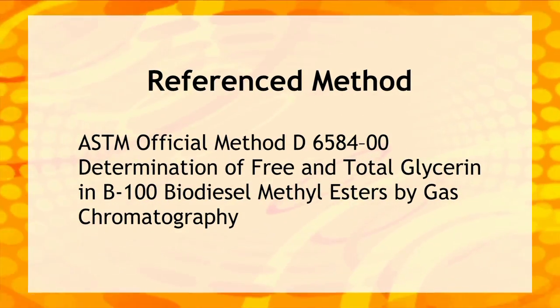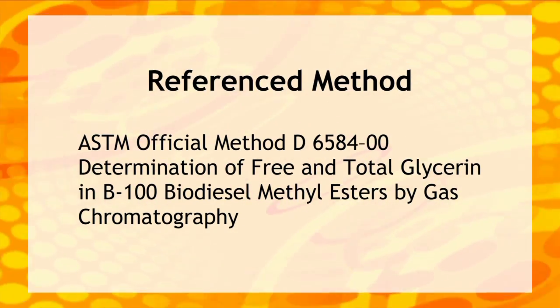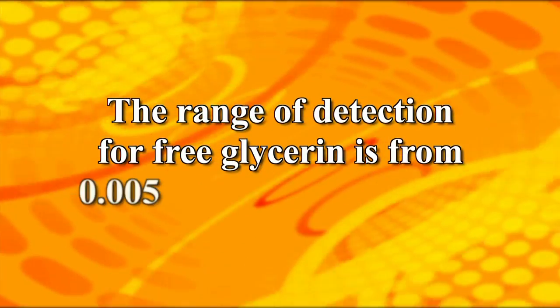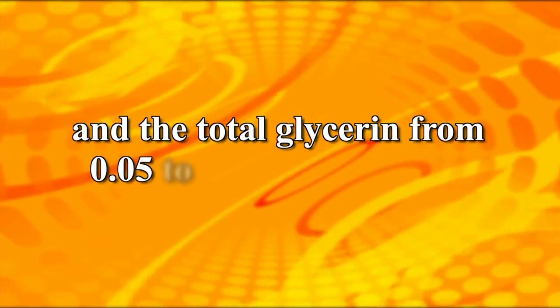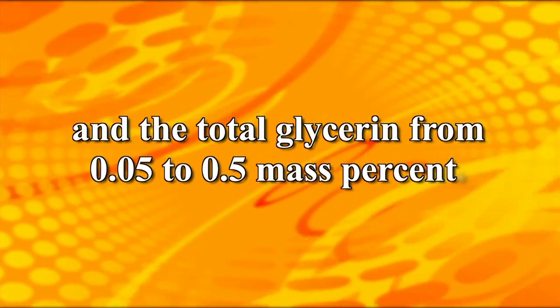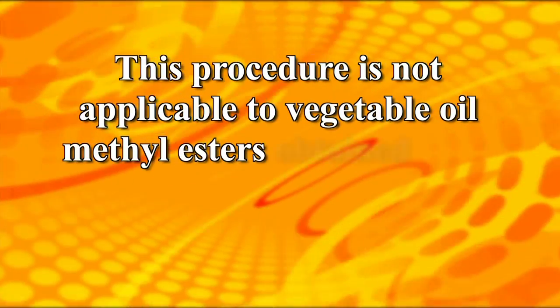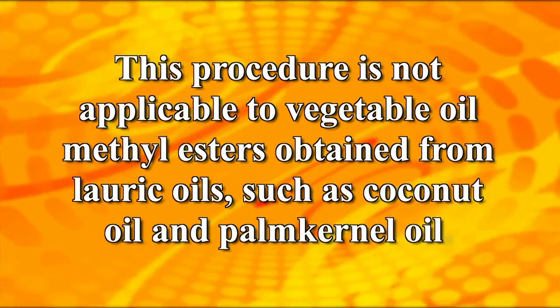The determination of Free and Total Glycerin method described here is based on this official method. The range of detection for Free Glycerin is from 0.005 to 0.05 mass percent, and the total glycerin is from 0.05 to 0.5 mass percent. This procedure is now applicable to vegetable oil methyl esters obtained from lauric oil such as coconut oil and palm kernel oil.